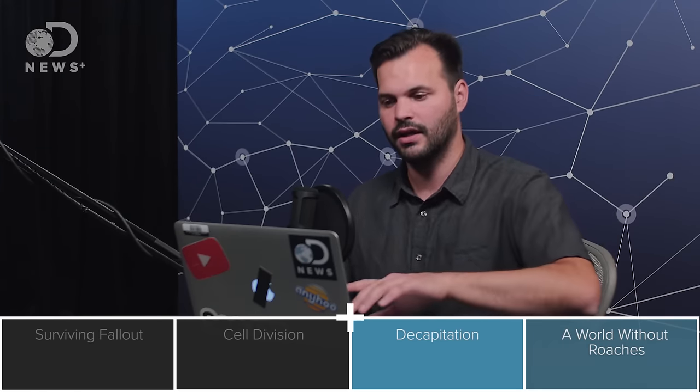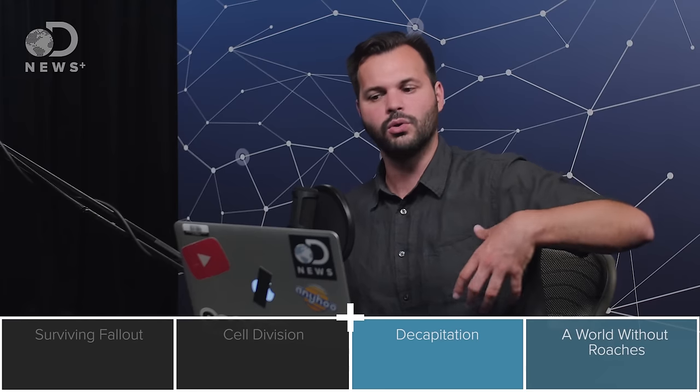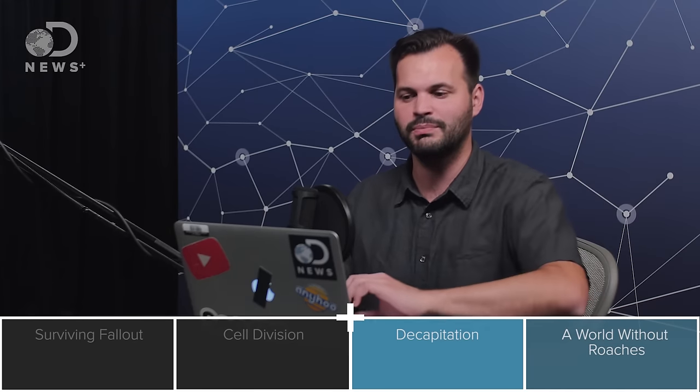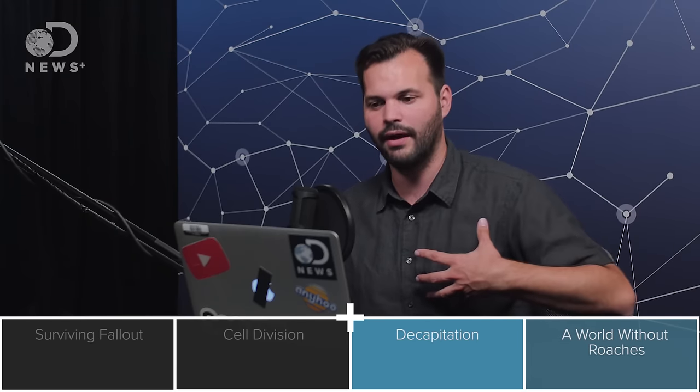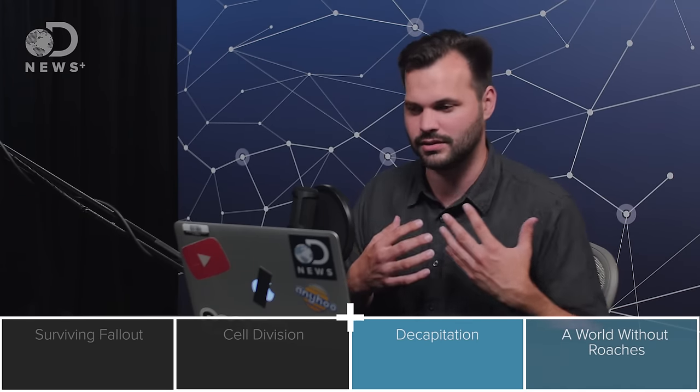Roaches don't breathe through their heads like we do. They breathe through little holes down the sides of their bodies called spiracles, where they draw air in that way. Then little tubes called trachea send the oxygen to their organs and tissues.